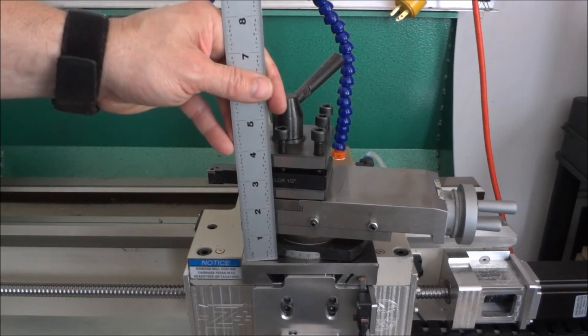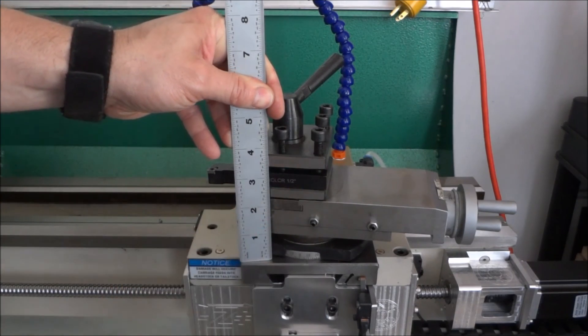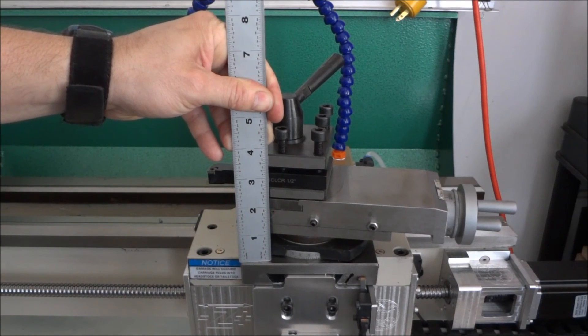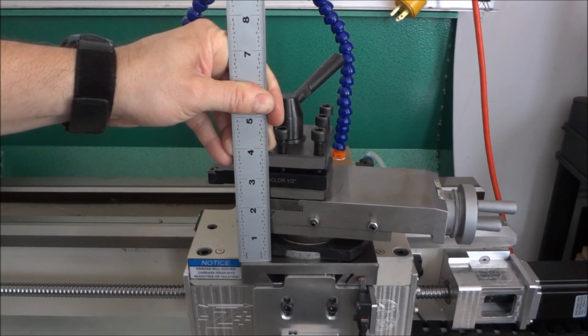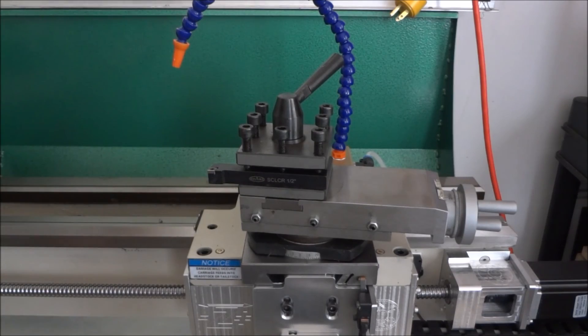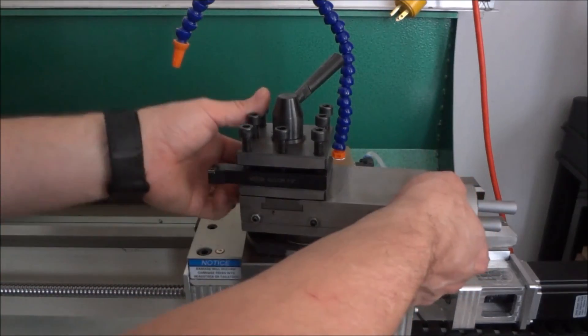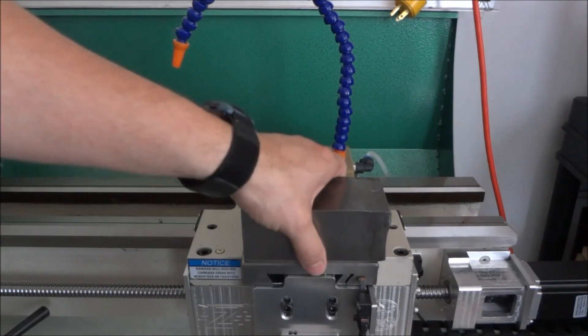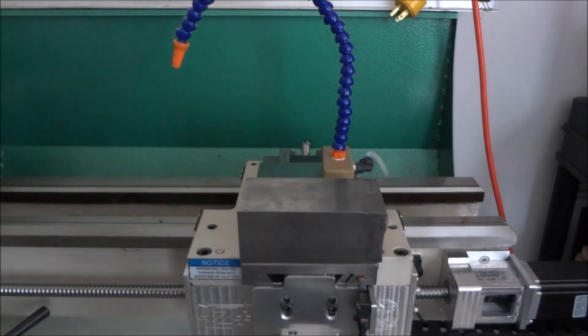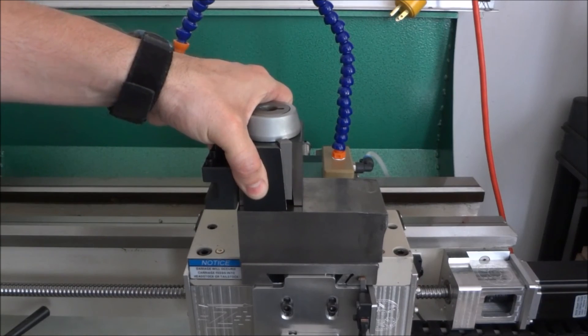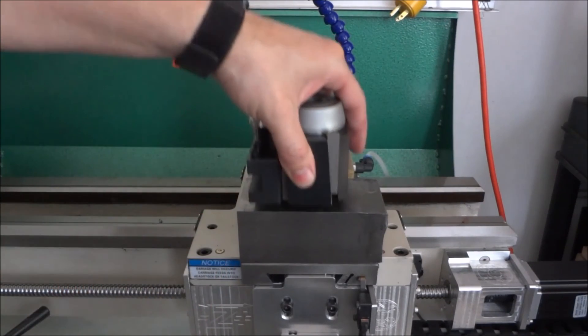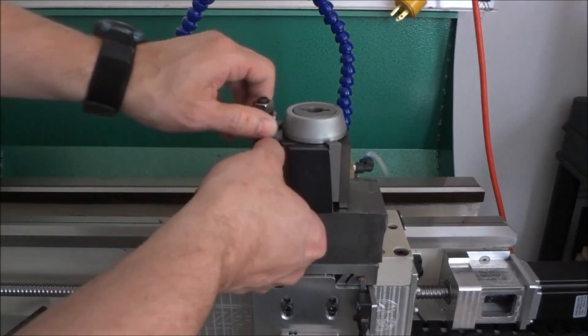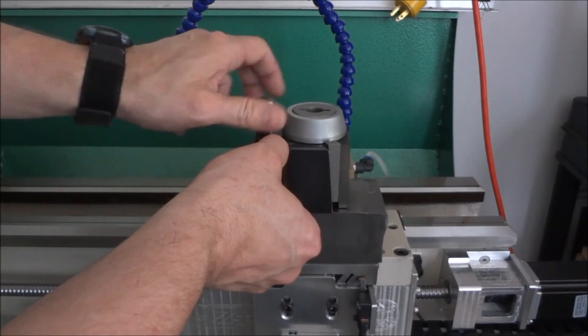The bottom of the compound to the bottom of the four-way tool post is about two and eleven-sixteenths. After doing all the measurements, I came up with a two-inch riser. That gives me the ability to lower my tool all the way down if my tool's in the quick change tool post and it's all the way down at the bottom.